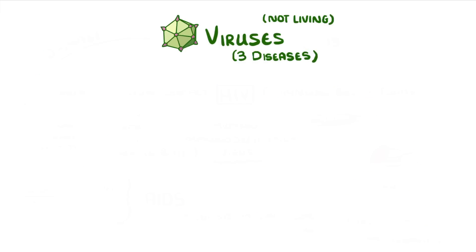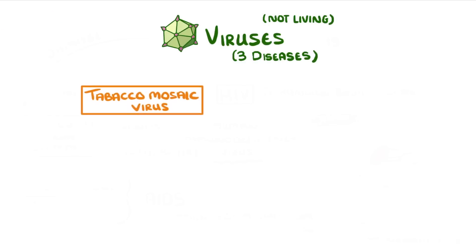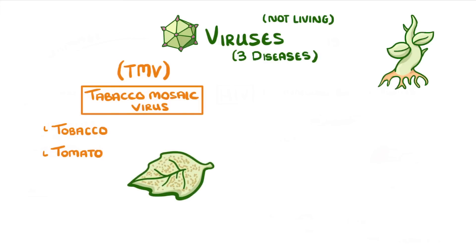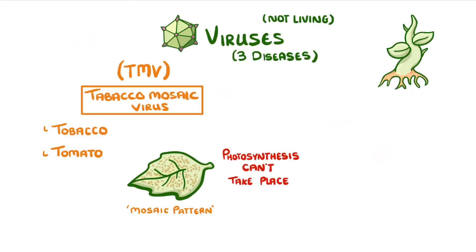The last viral disease we're going to cover is caused by tobacco mosaic virus, or TMV. This virus affects plants instead, but only certain species such as tobacco and tomato plants. It's called mosaic because it discolours patches on the leaves, causing a mosaic pattern to form. The problem is that photosynthesis can't take place in these discoloured patches, and so overall the plant won't be able to produce enough sugars for proper growth.